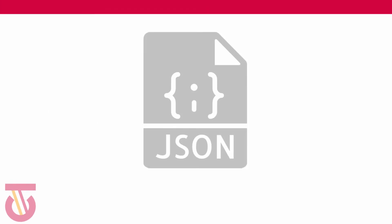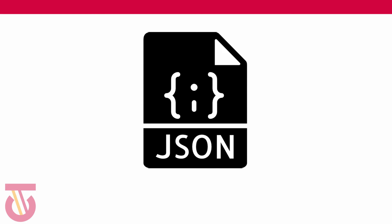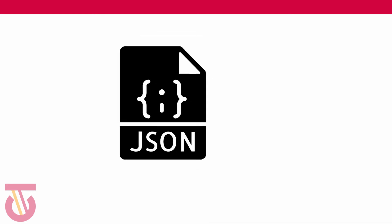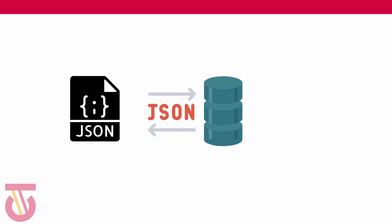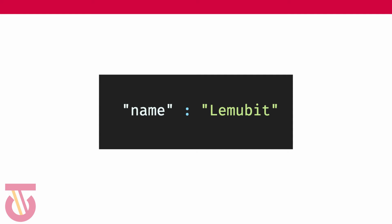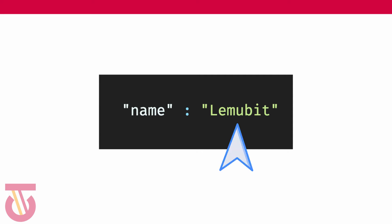JavaScript Object Notation — we simply say JSON. JSON is a file format and a data exchange format that is normally used to communicate between clients and servers. Normally a server gives information in JSON format and we receive it in that JSON format. The simple building blocks of JSON are keys and values. You have a key on the left and the value on the right. The value could be a number, a string, a boolean, an array, or even a null value.